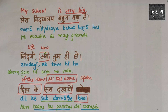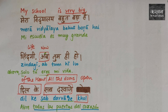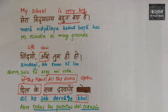And here I finish the lesson. In the next lesson — 'agle lesson mein' — we will learn about family, 'Pariwaar'. 'Agle lesson mein phir milenge' — we will meet again in the next lesson. Namaste.